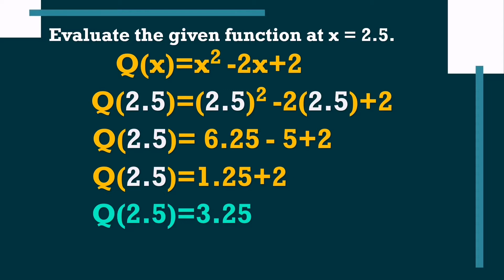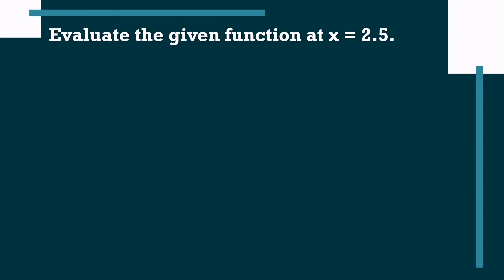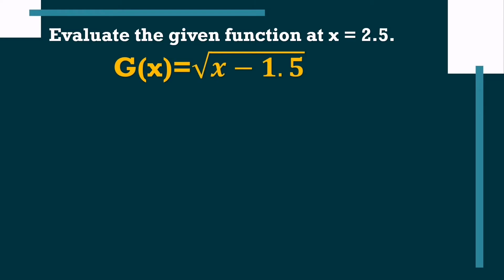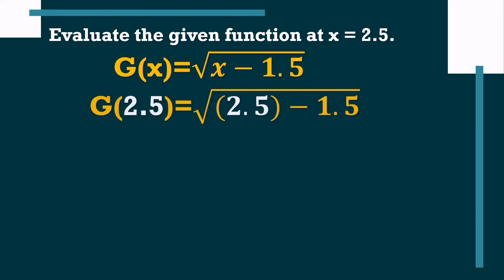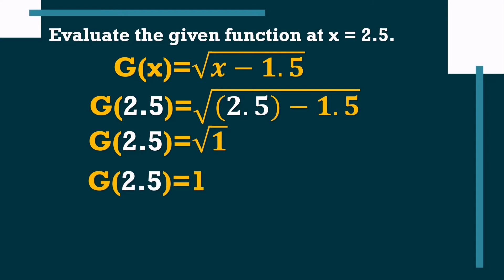Now let's proceed with the second function, which is a radical function. We evaluate g(x) equals the square root of (x minus 1.5) at x equals 2.5. Replace x with 2.5: g(2.5) equals the square root of (2.5 minus 1.5). The difference is 1, and the square root of 1 is 1. Therefore, at x equals 2.5, g(x) equals 1.